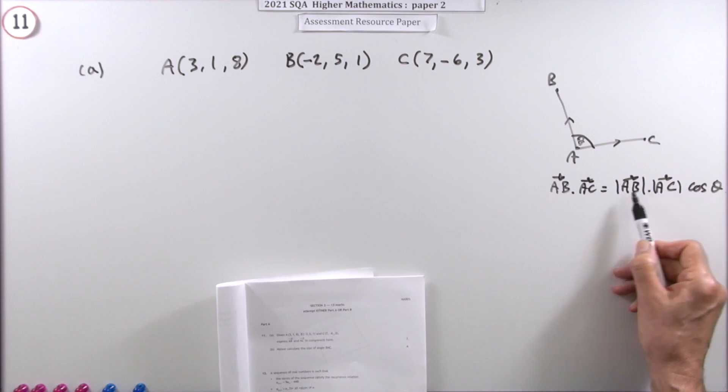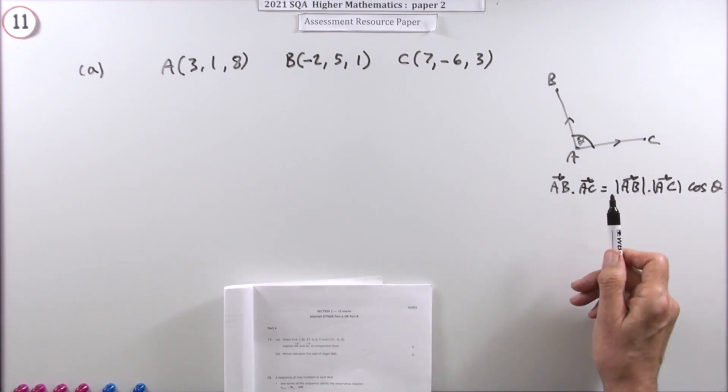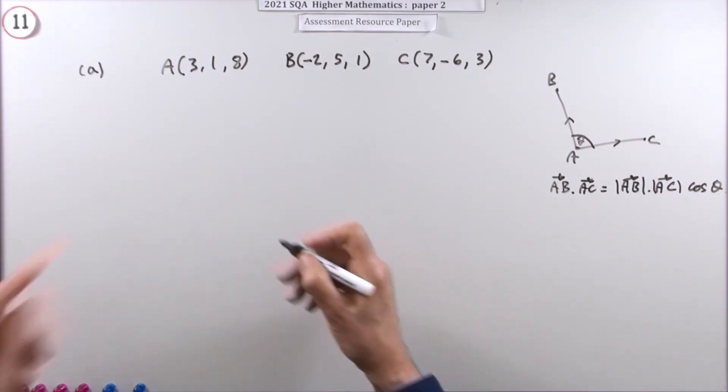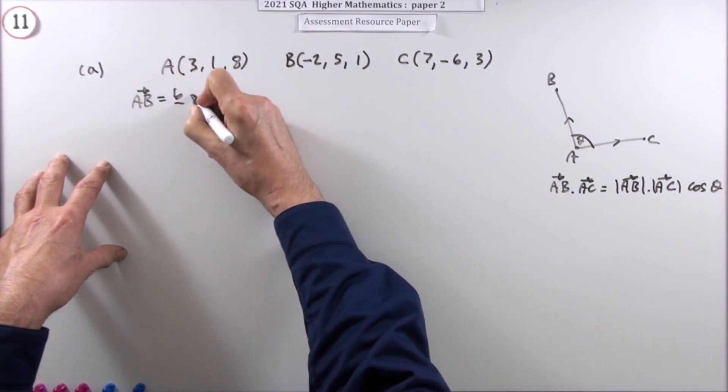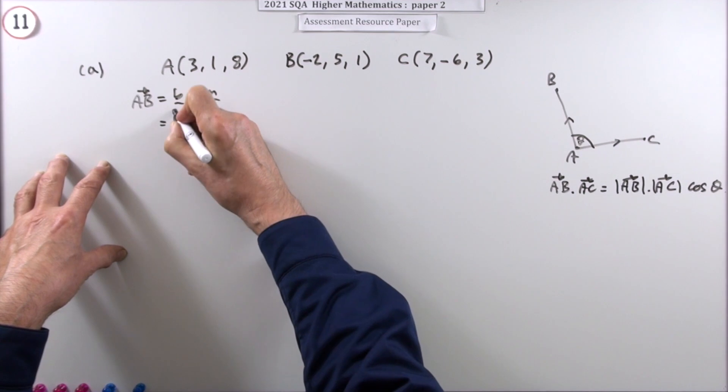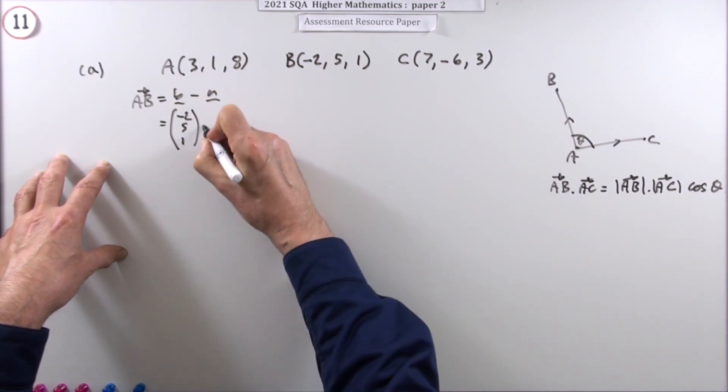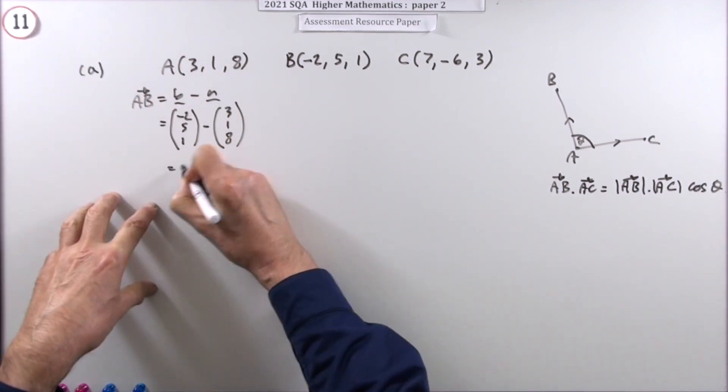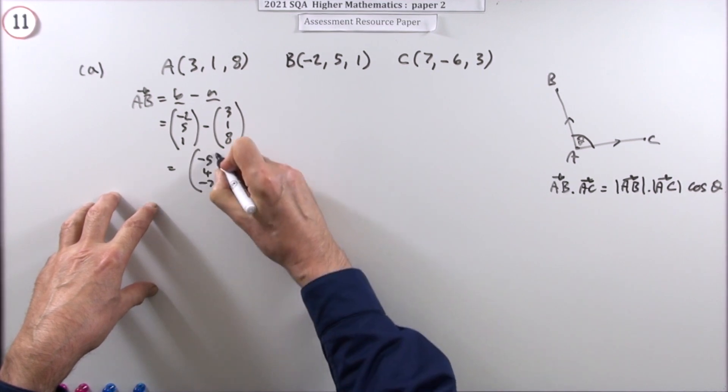So I want their components so I can then find their magnitudes. So in part A it said, what is AB? What are the components of AB? Well that'll be B minus A. So B is (-2, 5, 1). A is (3, 1, 8). So putting those together, we've got (-5, 4, -7).